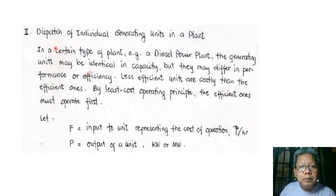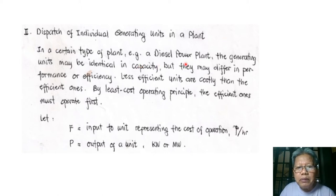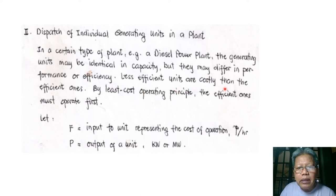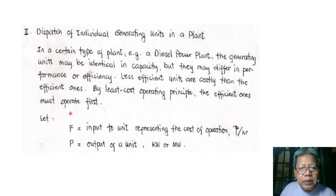Now, the dispatch of individual generating units in a plant. In a certain type of plant, for example a diesel power plant, the generating units may be identical in capacity — say 50 megawatts each — but they may differ in performance or efficiency. Less efficient units are more costly than efficient ones, so by the least-cost operating principle, the efficient ones must operate first.